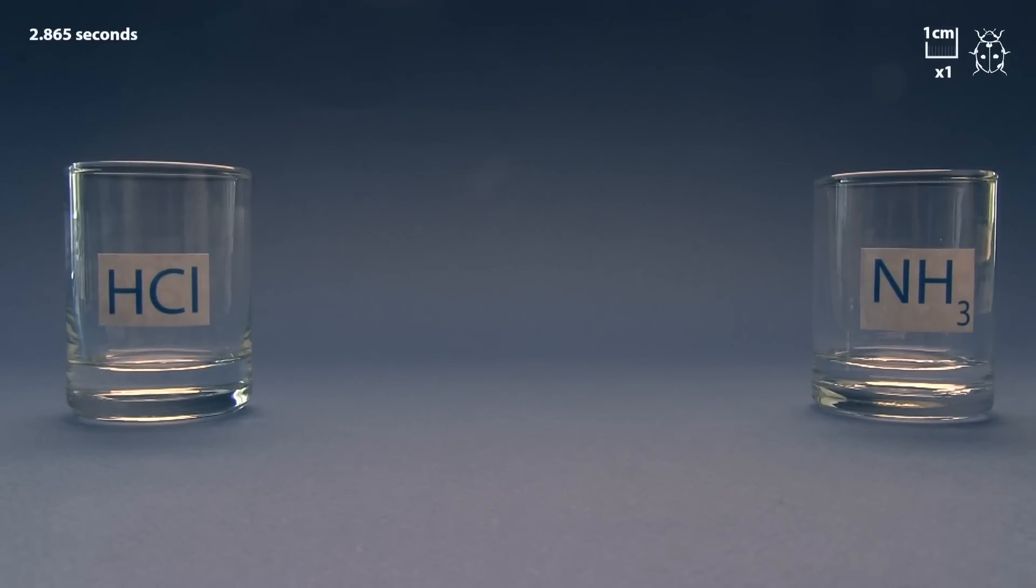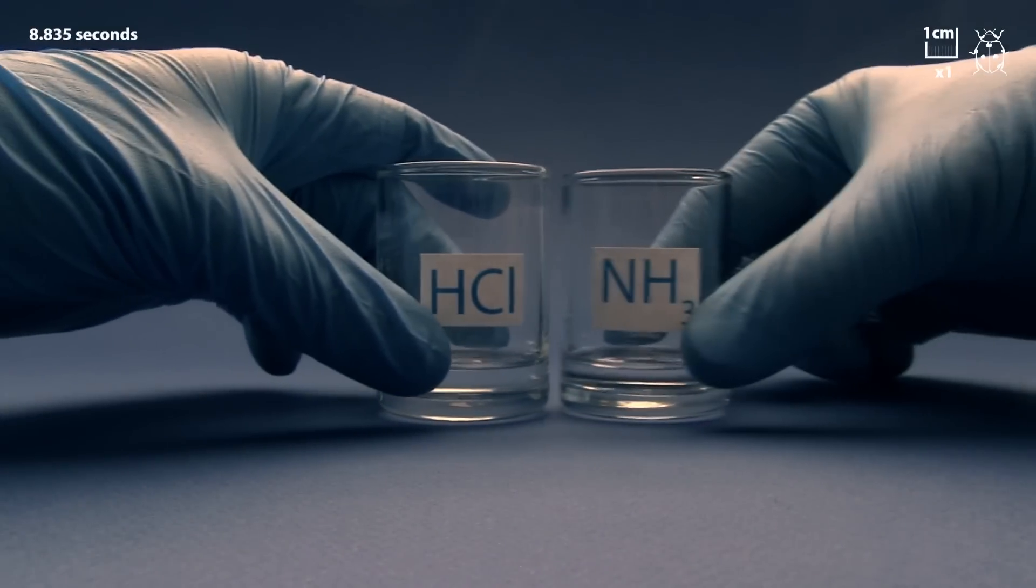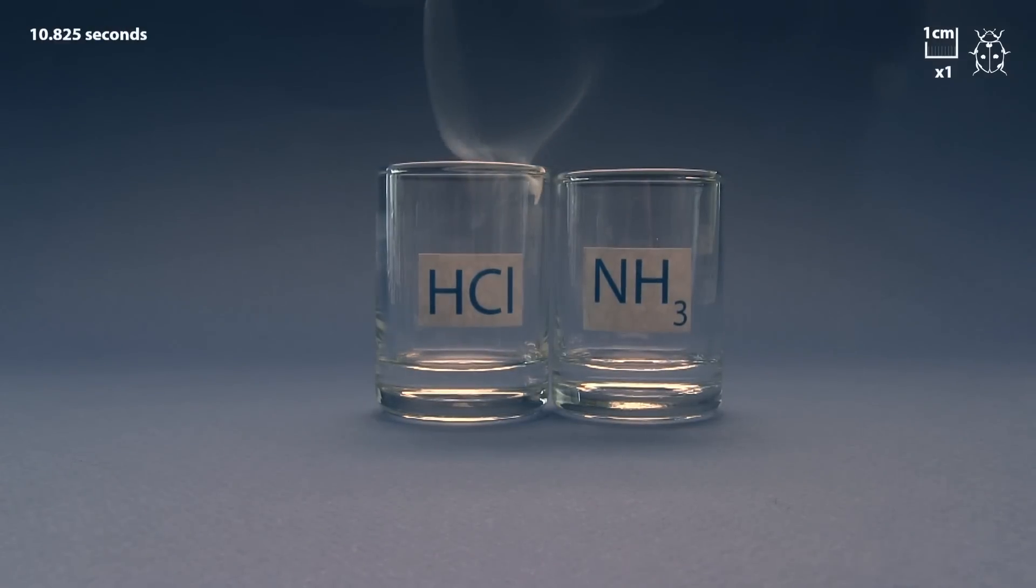Hydrogen chloride and ammonia are gases at room temperature. They are highly soluble in water. Dissolved molecules easily pass into air from the concentrated solution.